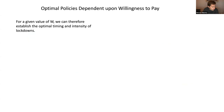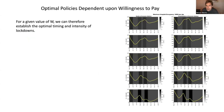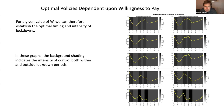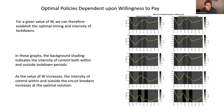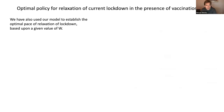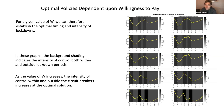For a given willingness-to-pay value W, we can establish the optimal timing and intensity of lockdowns, summarized in these graphs. As you go from top to bottom rows, willingness to pay increases. Background shading corresponds to the intensity of control at any point in time; solid bands show the timing of lockdown periods. As W increases, the intensity of control both within and outside circuit breakers increases at the optimal solution.